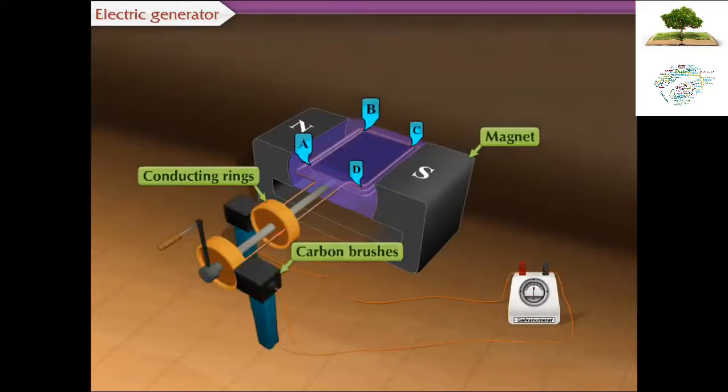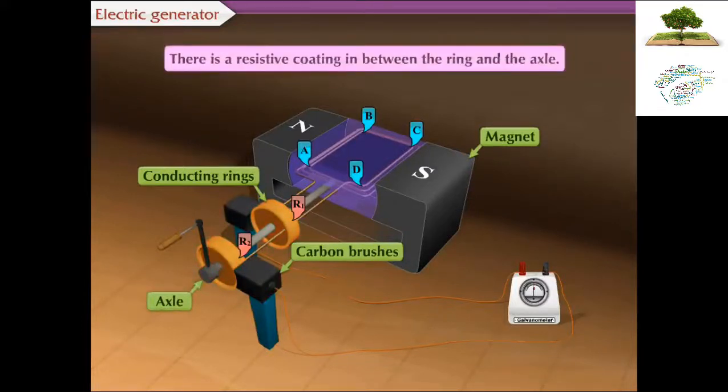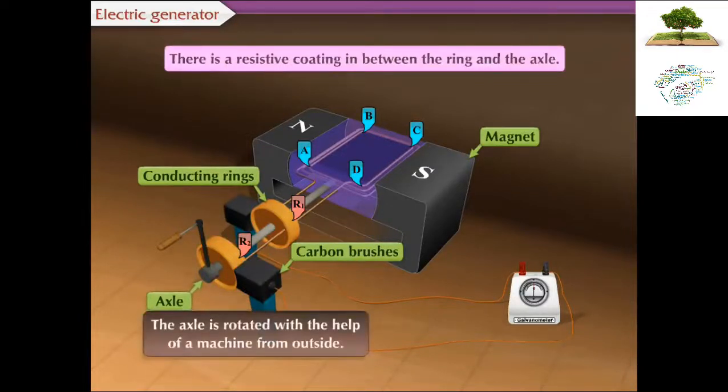A copper coil ABCD of rectangular shape is kept between magnets. The two ends of the coil are connected to the conducting rings R1 and R2 via carbon brushes. Both the rings are fixed to the axle, but there is a resistive coating between the ring and the axle. The axle is rotated with the help of a machine from outside.